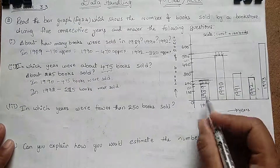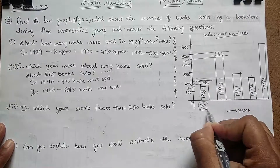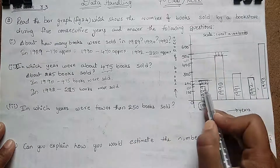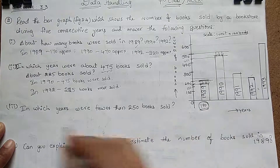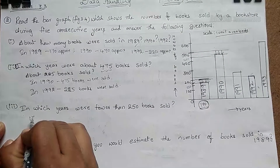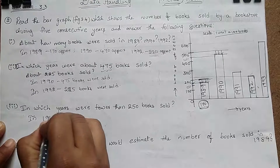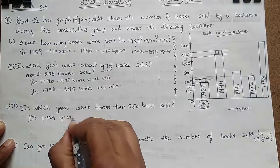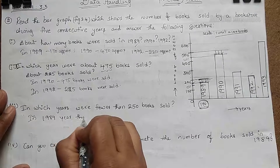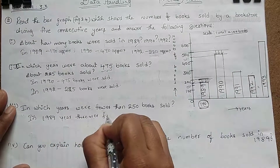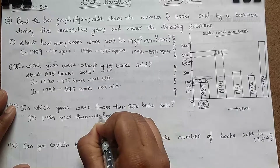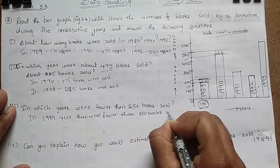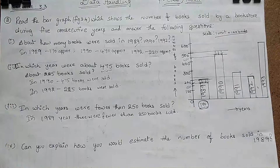Fewer than 250 books — I think this is 1989, because we estimated it as approximately 170 books, which is below 250. So the answer is the year 1989. In 1989, there were fewer than 250 books sold. This was the answer for this question.